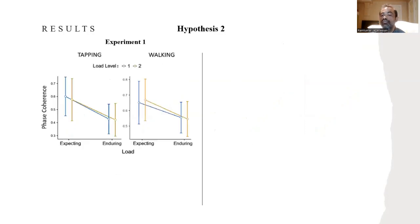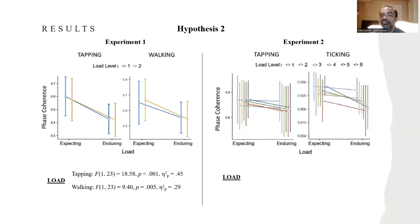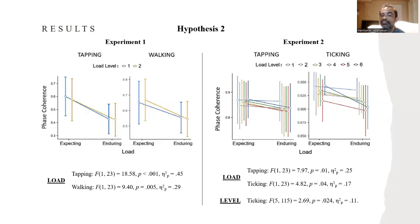For hypothesis two, results revealed a significant decrease in phase coherence during enduring load compared to expecting load, not supporting hypothesis two for experiment one or experiment two. No significant difference in phase coherence was found across load levels except for ticking in experiment two. No significant interaction effect was found between load condition and load level.